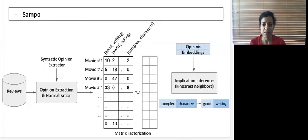SAMPO factorizes this matrix and learns embeddings for opinions and items. It then infers the implications between the opinions based on the cosine similarity of their embeddings. The top key implications are then included in the knowledge base.